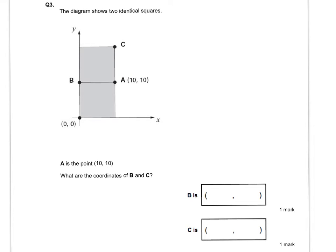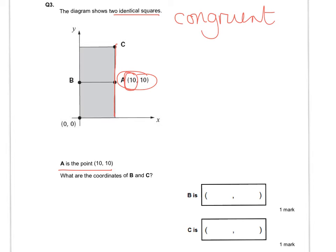In this question I'm going to underline the keywords — two identical squares, or the word we used in class: congruent — and I know that point A is (10, 10). I'm going to draw lines on the coordinate grid so I can see that if that is an x-coordinate of 10, that number must be 10 there, so C must have an x-coordinate of 10. For B, the y-coordinate is 10 — and because it's a square all sides are the same length, so that's 10 and that's 10.